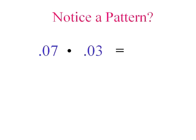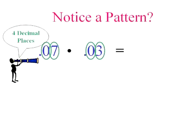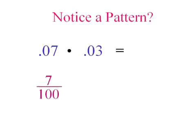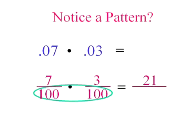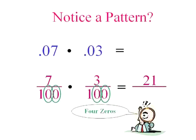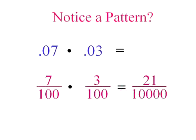Let's do another. This one has four decimal places. The first number as a fraction would be seven one-hundredths, wouldn't it? The second as a fraction would be three one-hundredths. And if I multiply them, I'd get twenty-one and a hundred times a hundred, I promise.